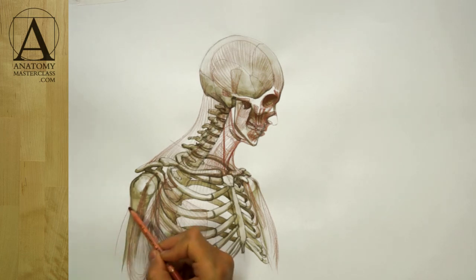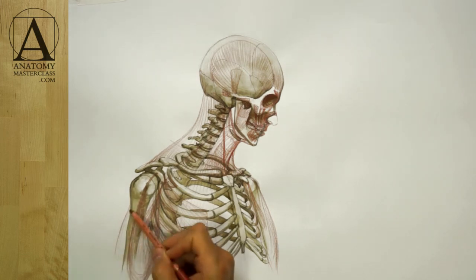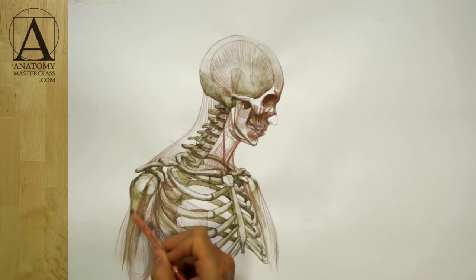The back portion of the upper arm is occupied by the triceps brachii, which extends the forearm.